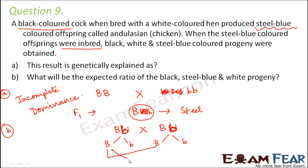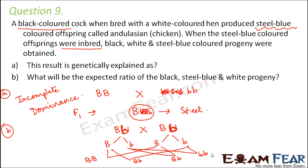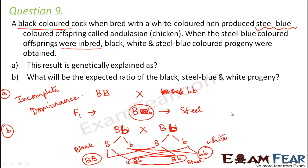From the cross Bb × Bb: BB gives black, the two Bb combinations give steel blue, and bb gives white. So the ratio of black to steel blue to white is 1:2:1. This is the expected ratio when the steel blue Andalusian offspring are inbred.